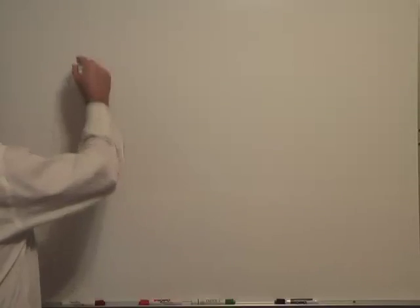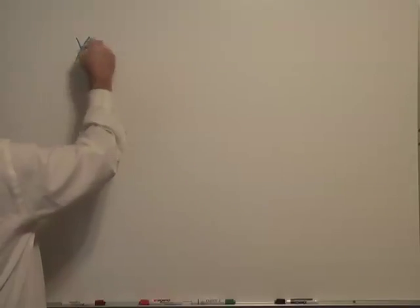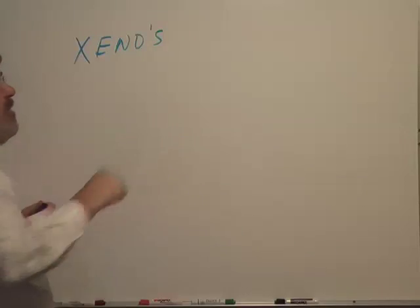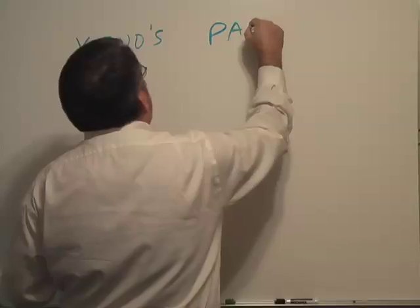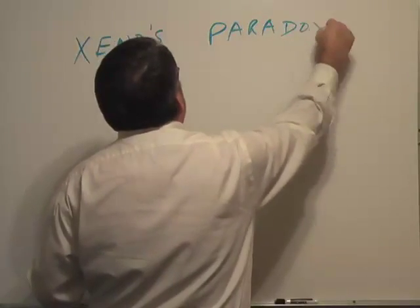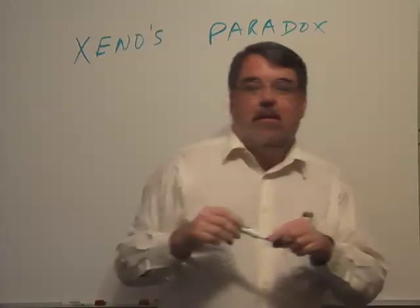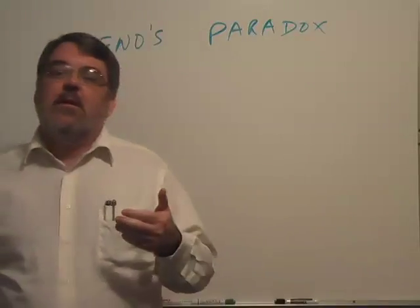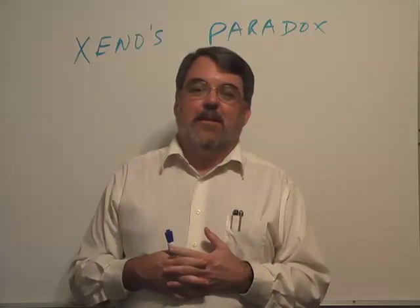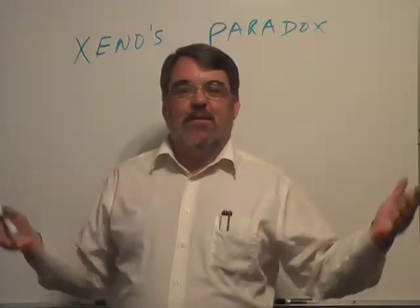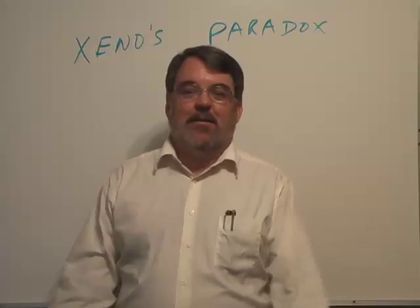Parmenides' most famous follower was Zeno. Zeno is spelled either with a Z or an X — I like to use X, but I don't think there's a specific right way to do this. Zeno was famous for constructing arguments called paradoxes, in which he challenged the notion that we perceive motion. His most famous one is simply called Zeno's paradox, and that's what I want to present to you now.